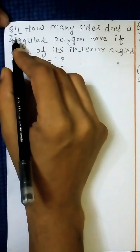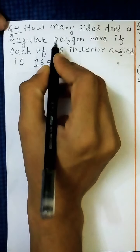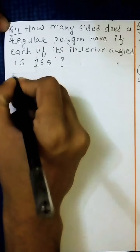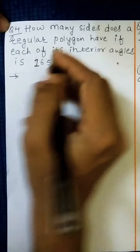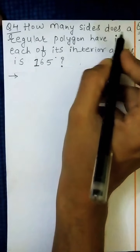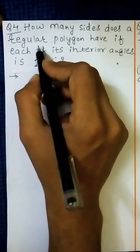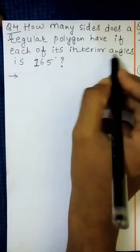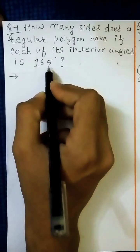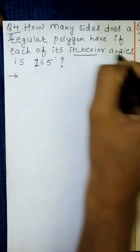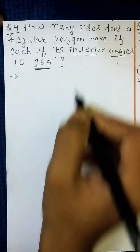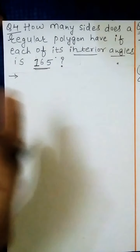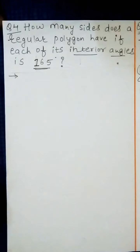Hello students, now we will see question number 4 of exercise 3.2. Let us first read the question: how many sides does a regular polygon have if each of its interior angles is 165 degrees? The interior angle is given to us — interior angle is 165 degrees.